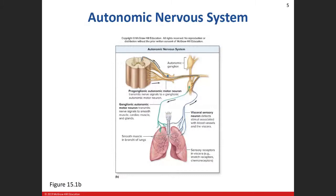Here's a basic breakdown of the autonomic nervous system — it looks slightly more complicated than the somatic. We have our visceral sensory receptors, in this example in the lungs, monitoring blood flow, blood vessels, and the amount of stretch occurring during breathing. That information transmits through the sensory neuron into the spinal nerve, goes into the posterior portion of the spinal cord, then synapses onto an interneuron or motor neuron.